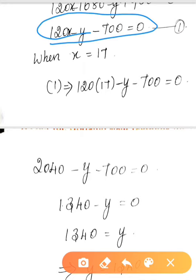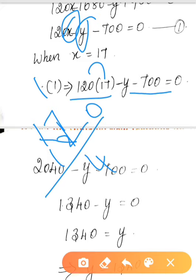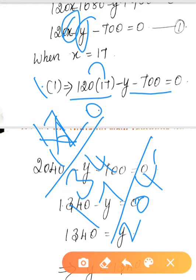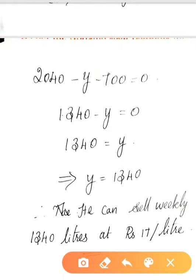Substituting x equals 17 in the first equation: 120 times 17 minus y minus 700 equals 0. Now multiply: 120 into 17 gives 2040.